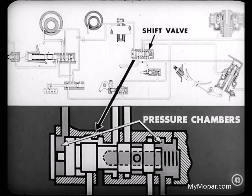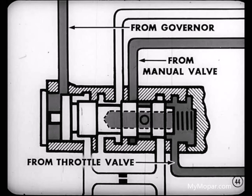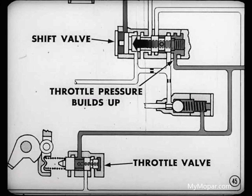This shift valve is a spool-type valve with pressure chambers at both ends. When the force acting on one end exceeds the force at the other end, the valve moves, opening or closing a passage to the operating units. To make it operate, we can bring oil under varying pressures to the shift valve. When we start the car out in drive range, the position of the accelerator pedal causes throttle pressure to build up in the throttle pressure chamber of the shift valve. This holds the shift valve in the downshifted position.